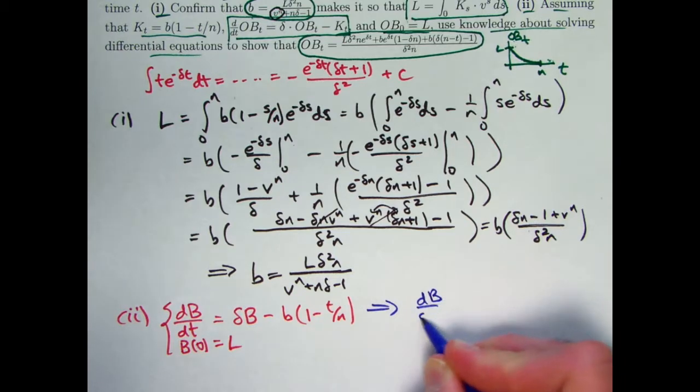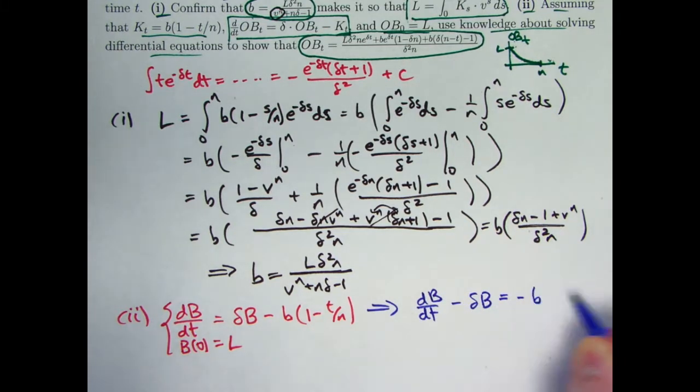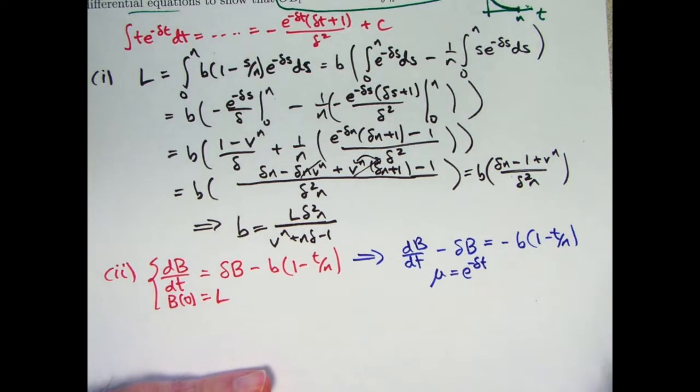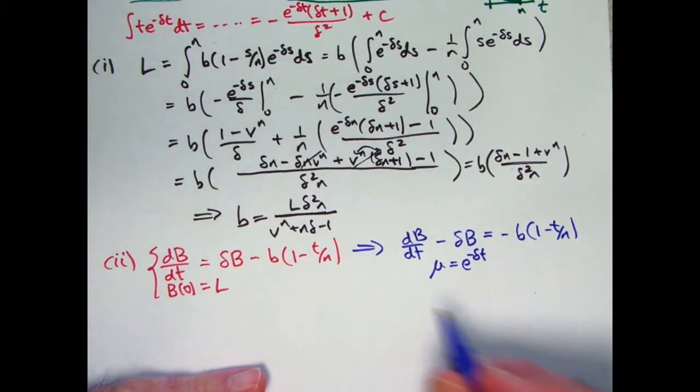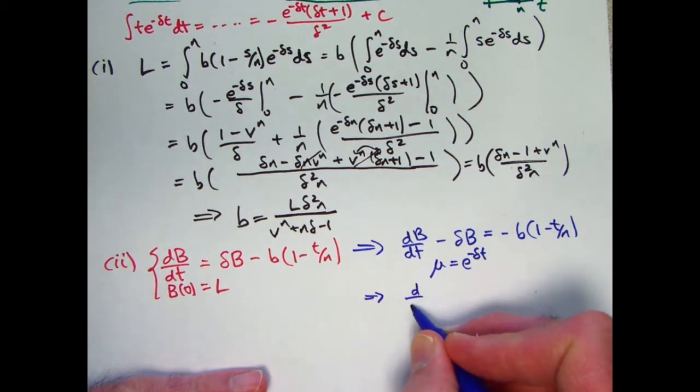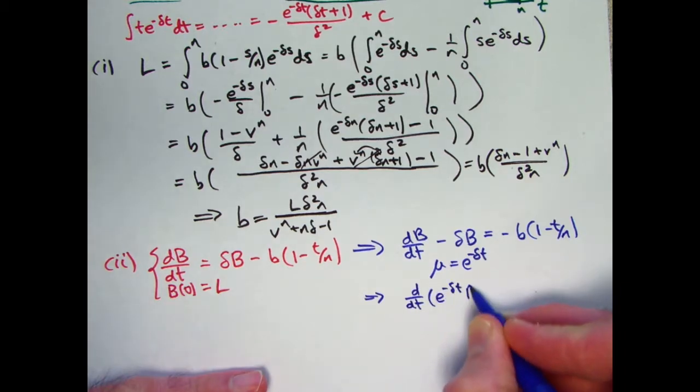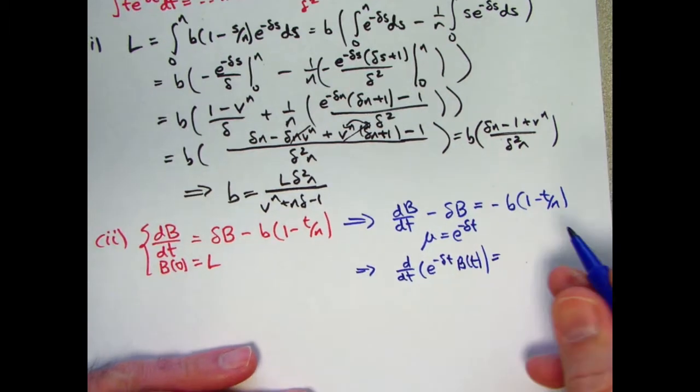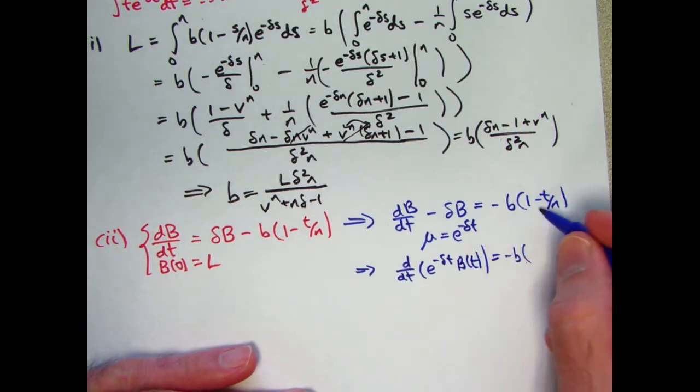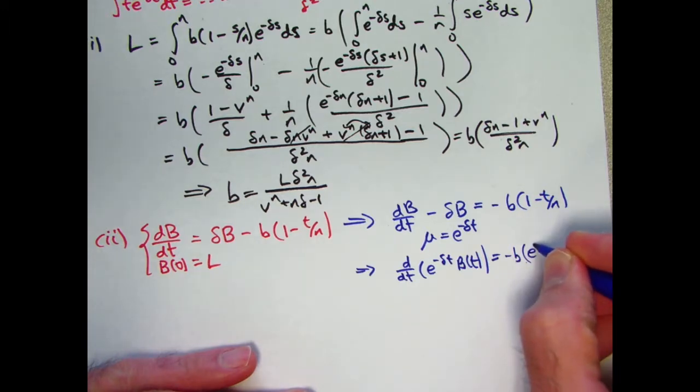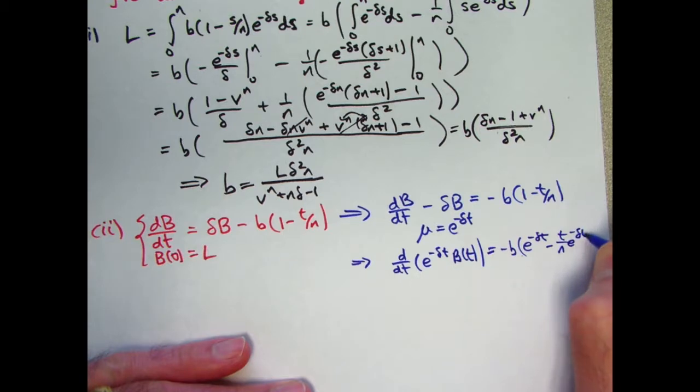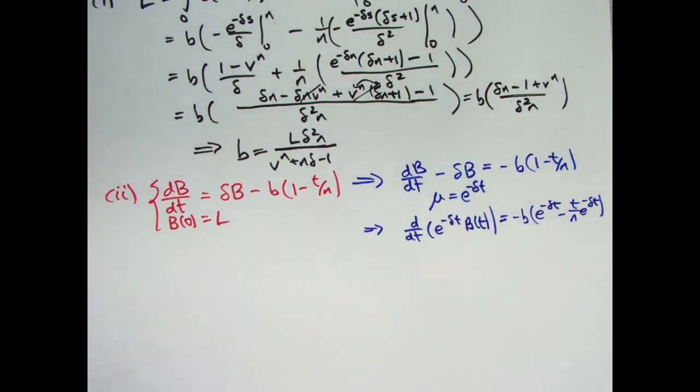Once again, we rewrite the differential equation by subtracting delta times B from both sides. Once again, we get the integrating factor to be e to the negative delta t in this case. It can be more complicated with more complicated kinds of functions in front of the B there. We multiply both sides of that by this integrating factor. And then what we get on the left side ends up being the derivative of the integrating factor times the unknown function. I skipped a step there. It's the product rule that allows you to see that. And on the right, we get negative b. I'm going to go ahead and multiply the e to the negative delta t through the parentheses because I'm going to need to integrate both pieces. E to the negative delta t minus t over n e to the negative delta t.